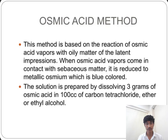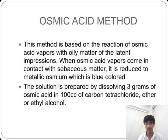The osmic acid method is based on the reaction of osmic acid vapors with the oily matter of the latent impression. When osmic acid vapors come in contact with sebaceous matter, it is reduced to metallic osmium, which is blue colored. The solution is prepared by dissolving 3 grams of osmic acid in 100 cc of carbon tetrachloride or ethyl alcohol.